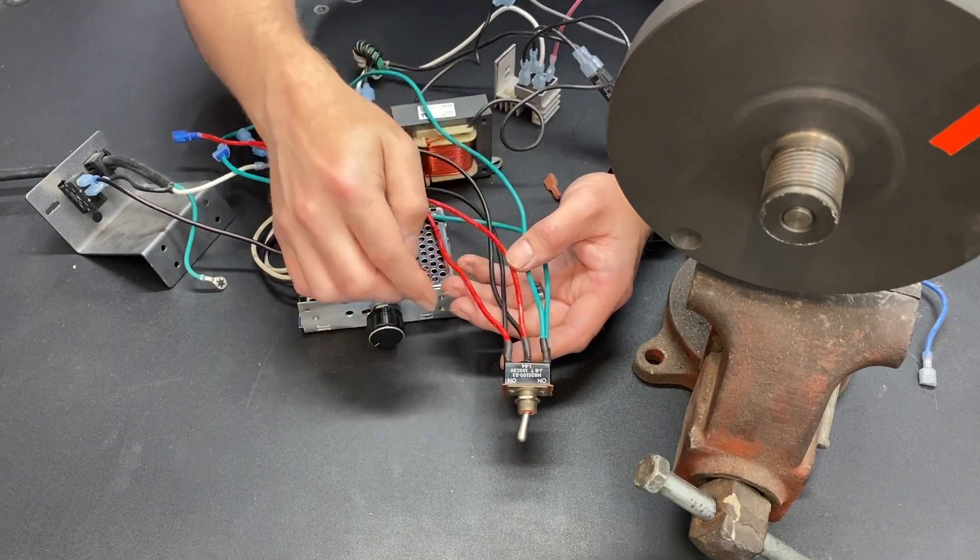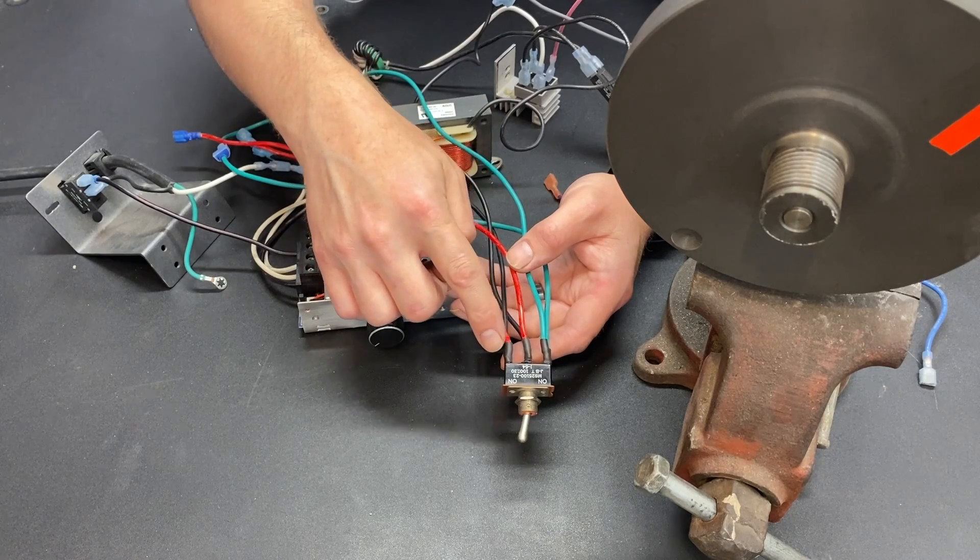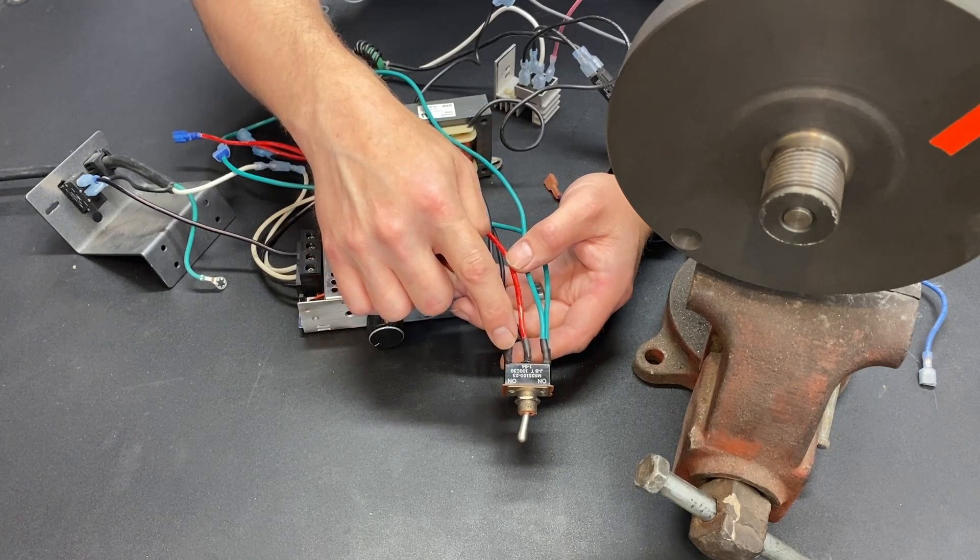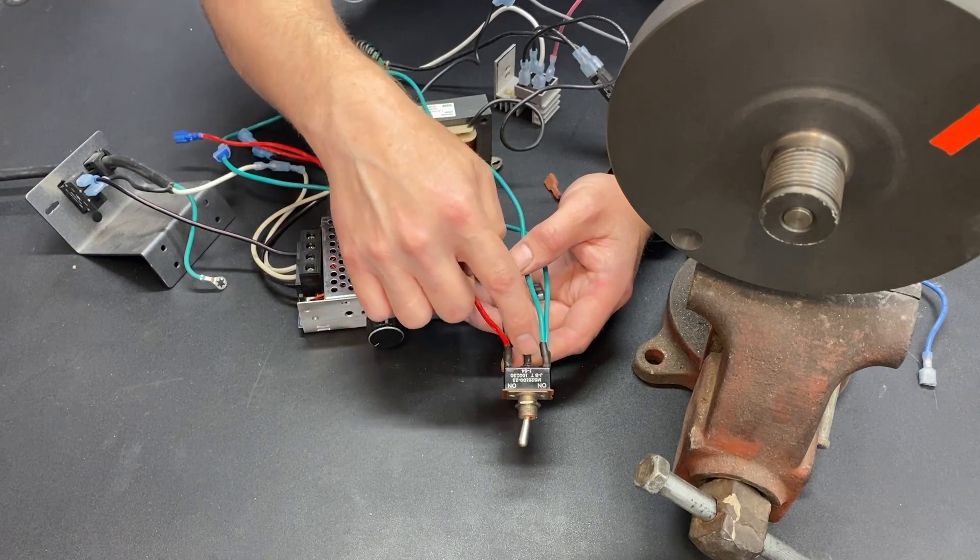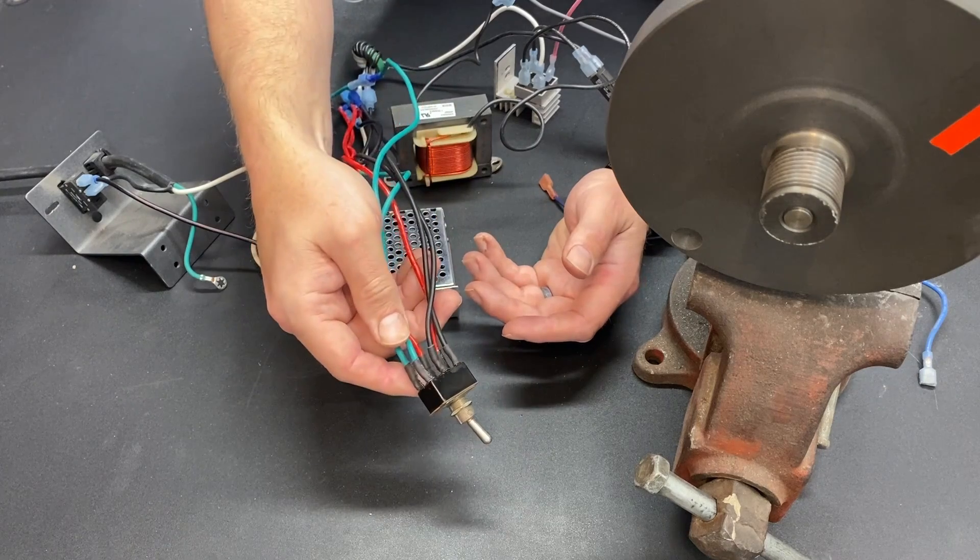So the way a double pole double throw switch works is these two center terminals are what I would call the common terminals. They're going to something. And then when it switched one direction you get a connection from here to here. And when it switched the other direction you get a connection from here to here. And the same is true of the other side.